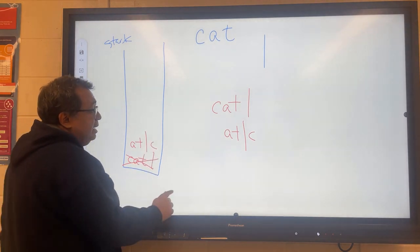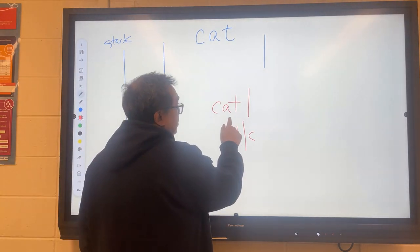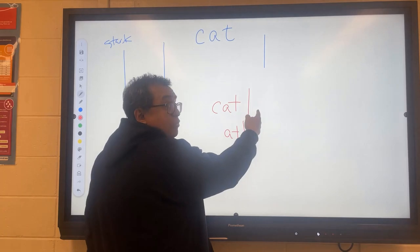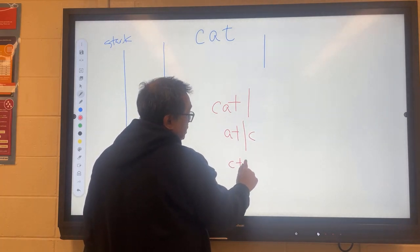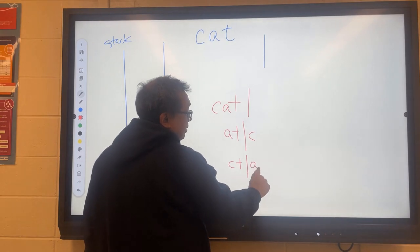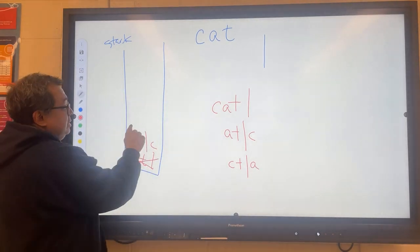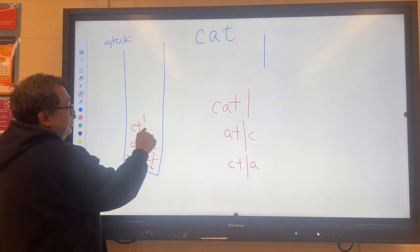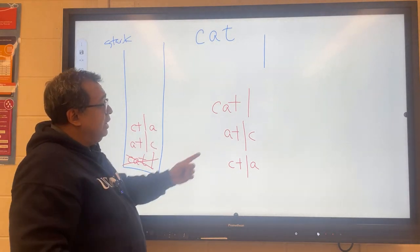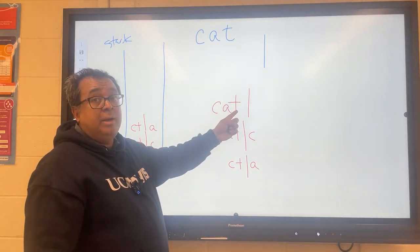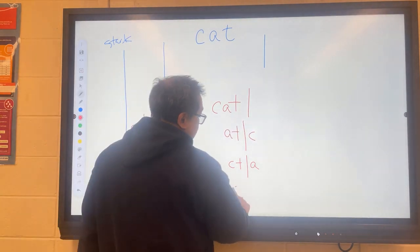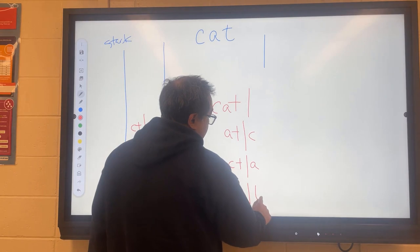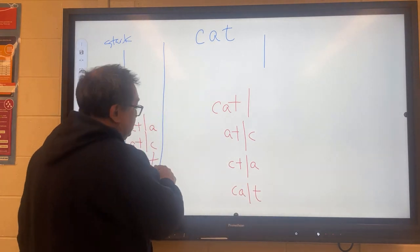Now, the next one I'm going to move is the A. I'm going to move the A over to the end of the string. So I'm going to end up with CT pipe A. I'm going to put that in there. And then one more in my internal loop. I'm going to move the T over. So I'm going to end up with CA pipe T, and I'm going to put that in the stack.